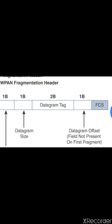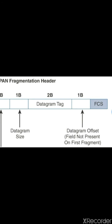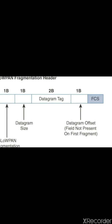The first field is the datagram size — a one-byte field that specifies the total size of the unfragmented payload. The second is the datagram tag, composed of two bytes, which identifies the set of fragments for a payload. The third is the datagram offset, which describes how far into a payload a particular fragment occurs.